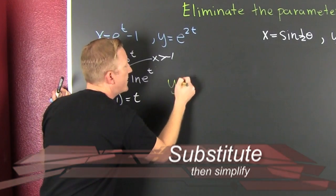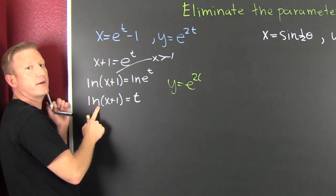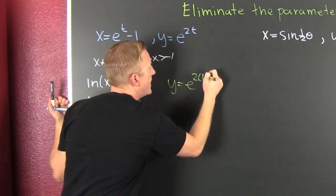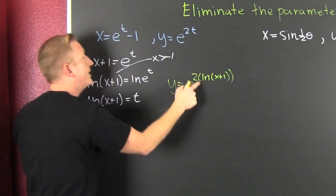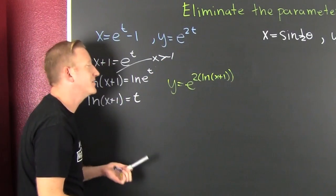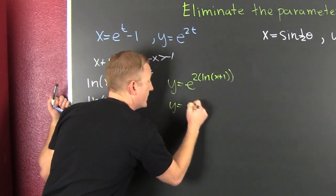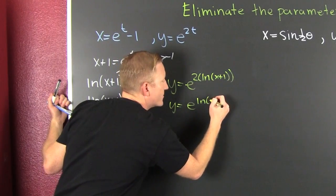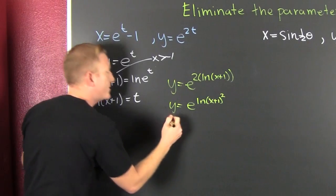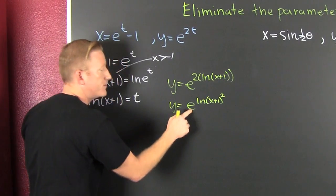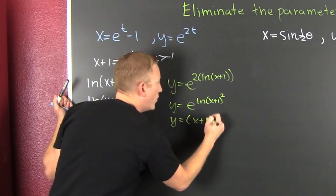So then the natural log of x plus one is equal to t. What are we going to do with that? We're going to substitute it into the other. We're going to say that y is equal to e to the two times the natural log of x plus one. That's our new t because we are trying to get rid of our t. We could leave it there, but come on now. This is the natural log of x plus one, that whole thing is squared.